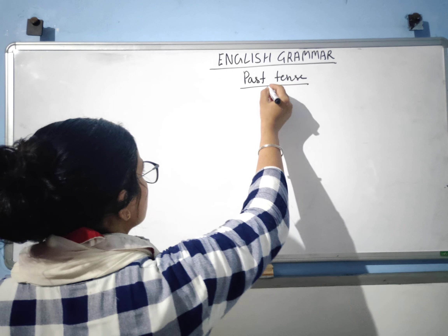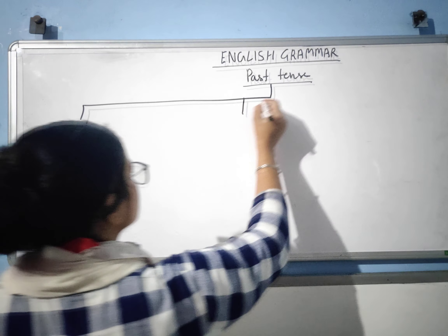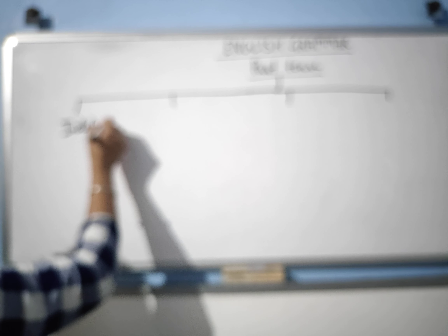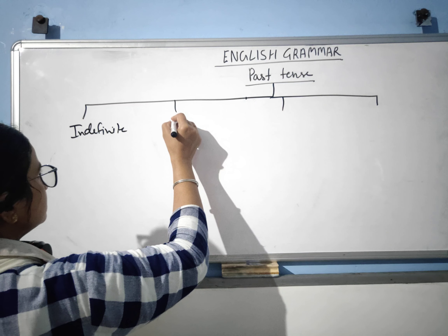Past tense is divided into four parts — not three, four parts: indefinite, perfect, continuous, and perfect continuous. These are also four types of past tense, the same as present tense.